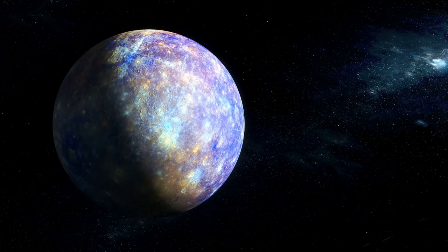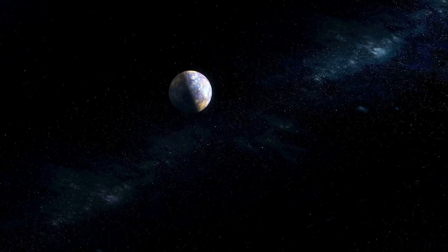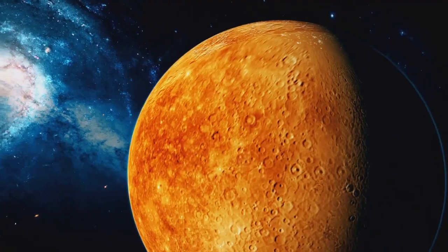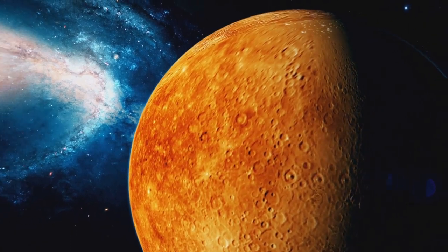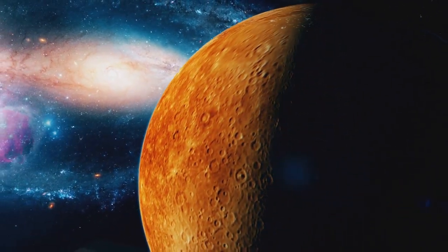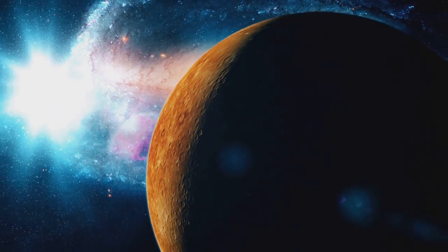Orbiting our Sun, we find eight diverse planets. The four innermost are the terrestrial or rocky worlds: Mercury, Venus, Earth and Mars. Each of these planets has its own unique characteristics, from Mercury's scorched surface to Mars' dusty red landscape. Earth, our home planet, stands out as the only known world to harbor life.